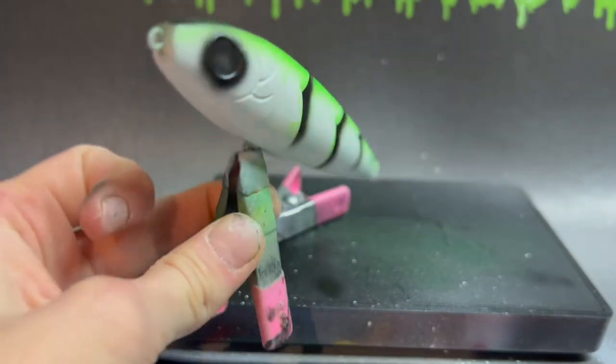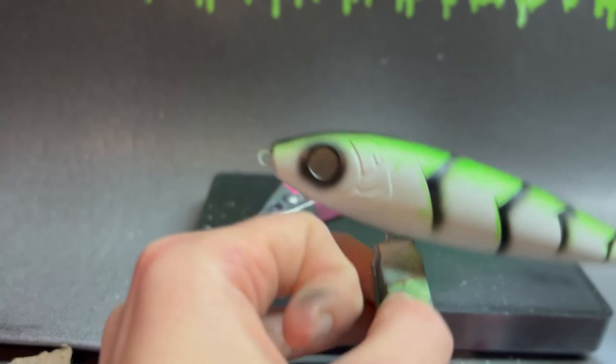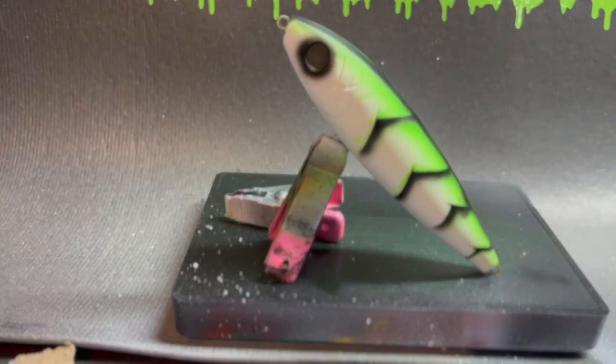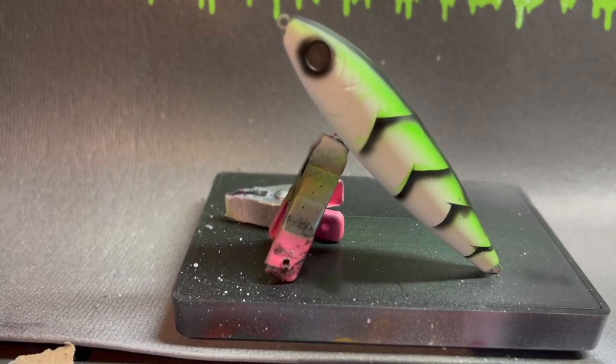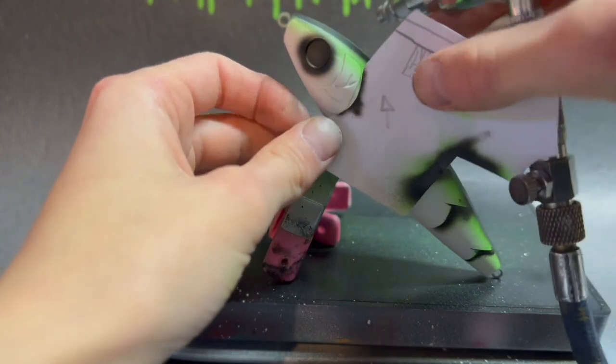Look at that mean machine. All right. So now the next step is I'm going to kind of mark the gill plate out. And I'm going to be using a stencil for that. Which this one right here I'll use.